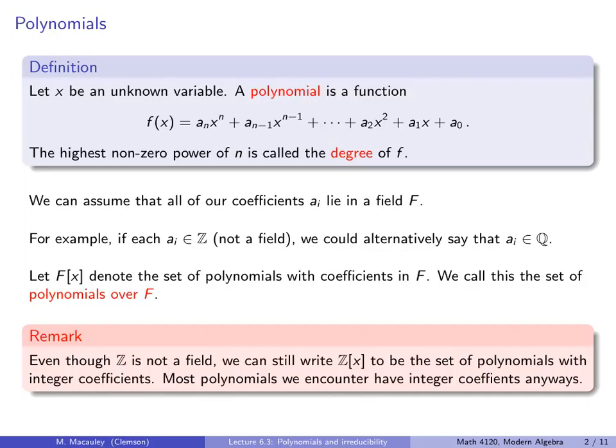It's worth noting that even though I just defined this using F, sort of implying that F is a field, it doesn't have to be. Even though the integers Z is not a field, we can still write Z[x] to be the set of polynomials with integer coefficients. Most polynomials we encounter have integer coefficients anyway, and even if they have rational coefficients, we can always multiply by a big enough scalar to make them all integers, and that doesn't change the roots at all.